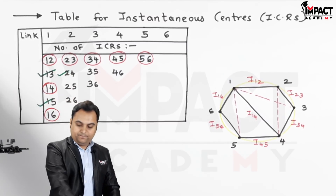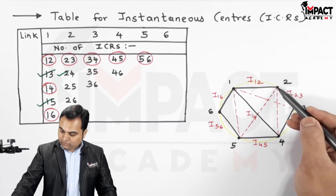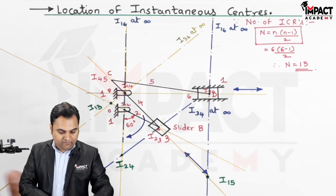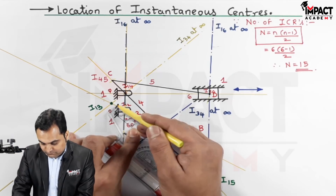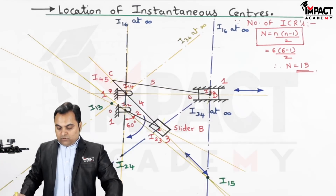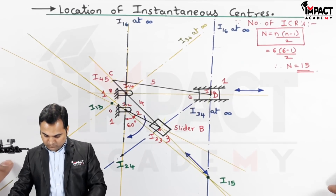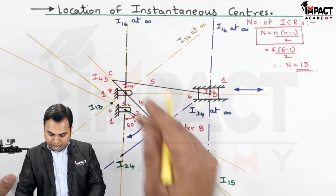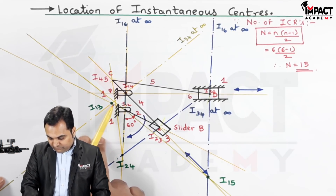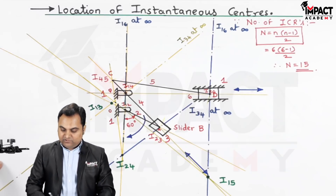For I25, we use triangles 1-2-5 and 2-4-5. Joining I12 and I15 gives one line. For the second triangle, we join I24 and I45. Where the line through I12 and I15 meets the line through I24 and I45 gives us I25.